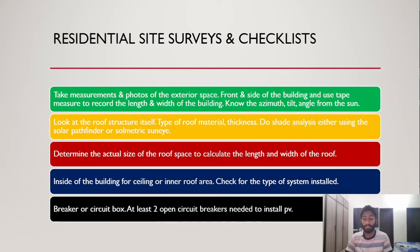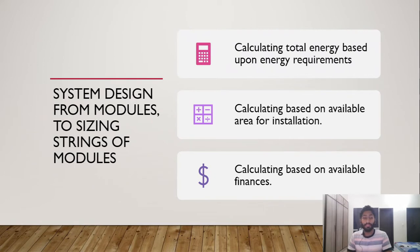When it comes to system designing from modules and sizing strings of modules, there are three key parameters. First is calculating total energy based on energy requirements, which requires knowing the total available area based on energy requirements, calculation of the data of the site and location, and estimation of the losses.